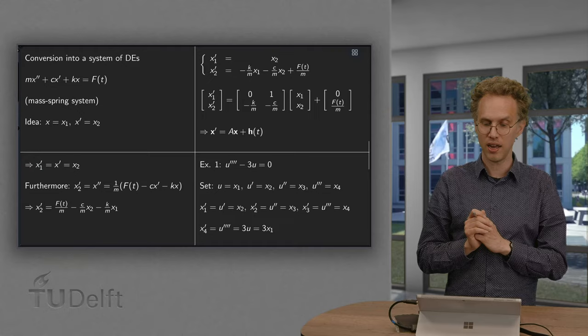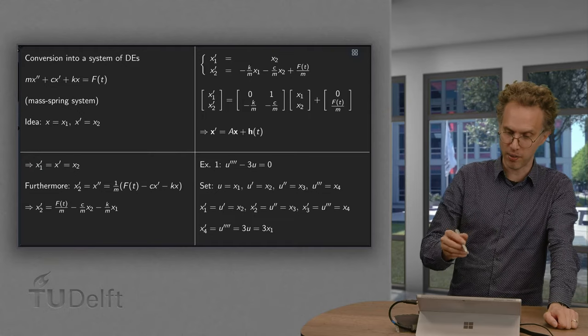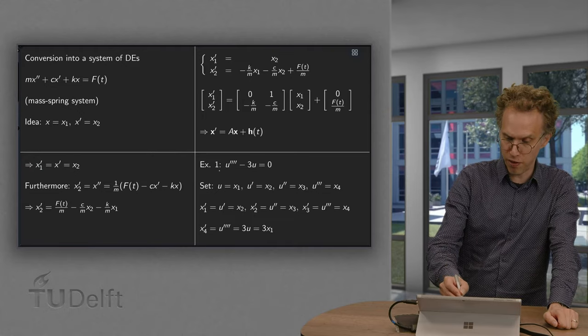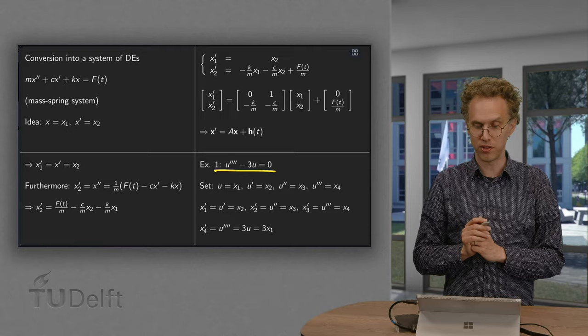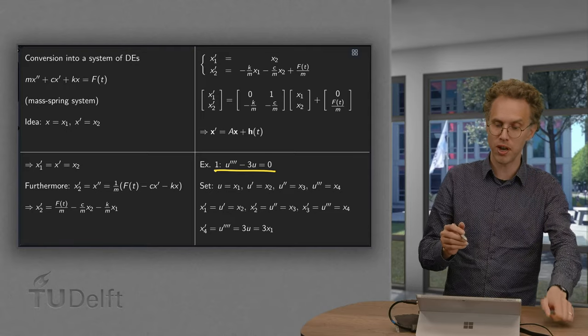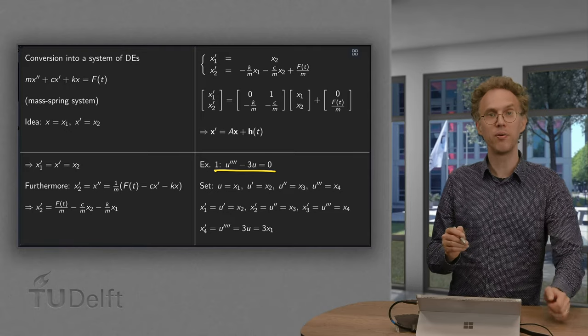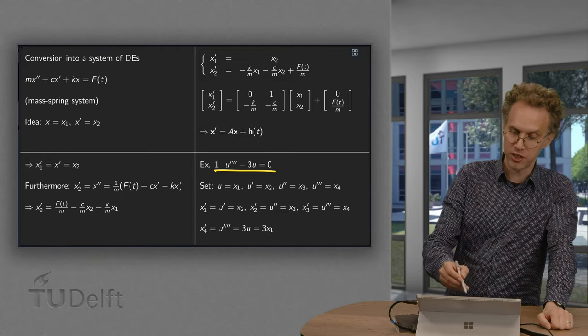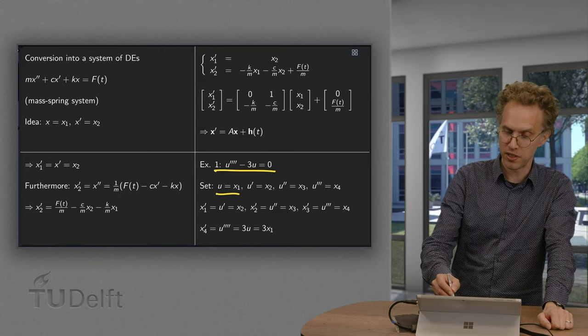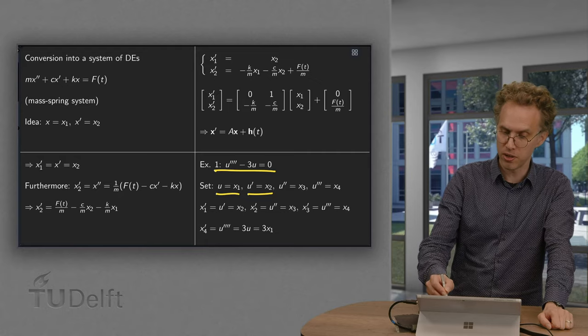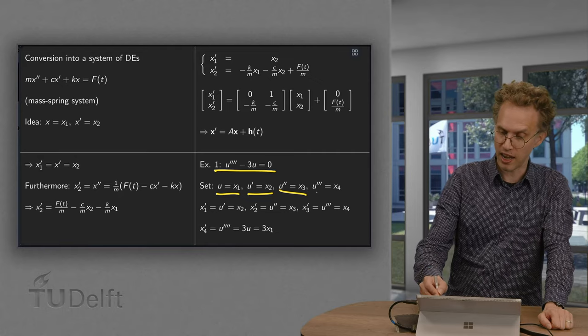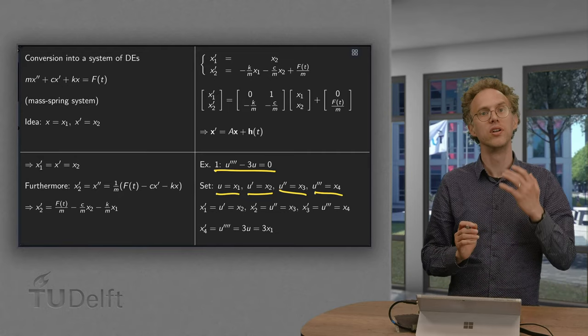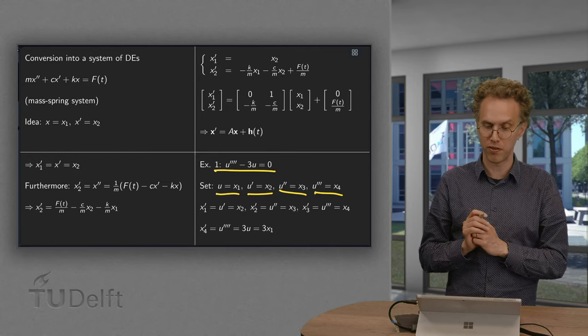Let's do a next example, a bit bigger one. U of fourth derivative minus 3 times u equals 0. So, what do we do now? And now we get four variables: x1, x2, x3 and x4. We set u equal to x1, u prime equal to x2, u double prime equal to x3, and u triple prime equal to x4. So, those are our four variables.